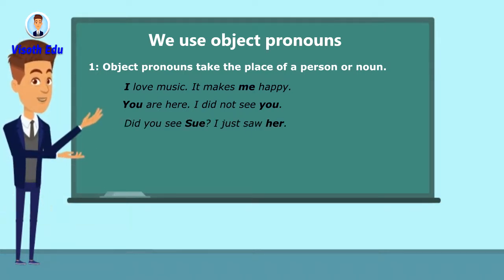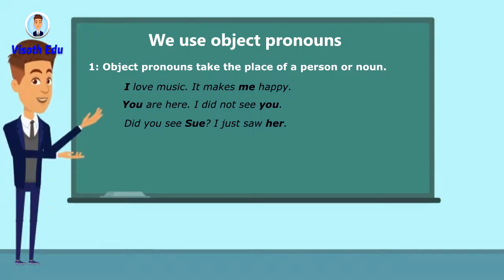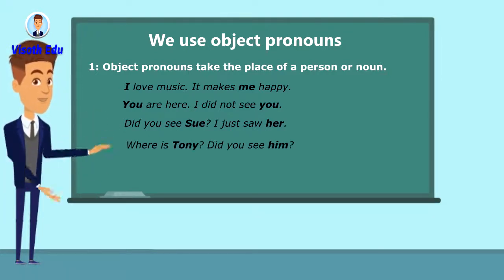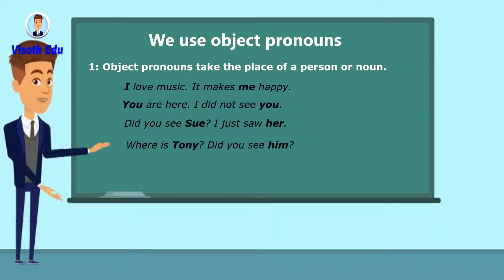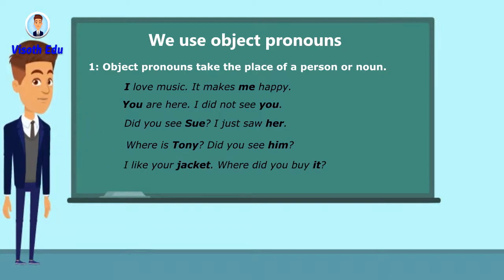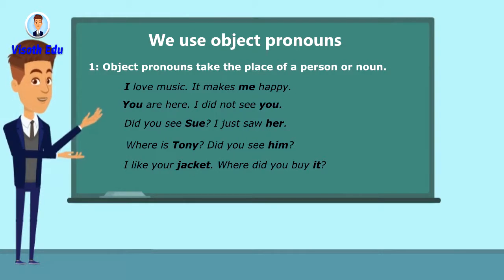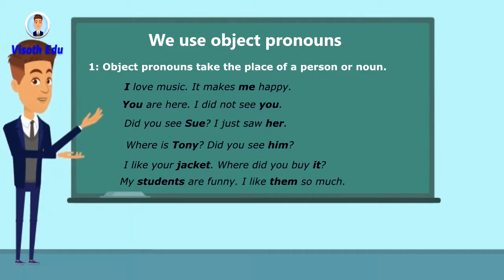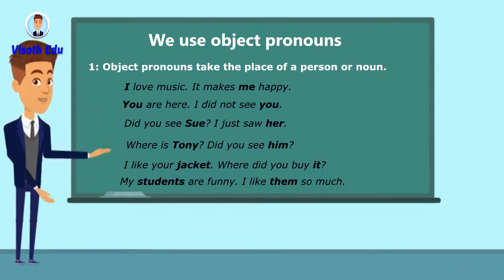'Did you see Sue? I just saw her.' 'Her' is the objective pronoun — it takes the place of the noun Sue. 'Where is Tony? Did you see him?' 'Him' is the objective pronoun — it takes the place of the noun Tony. 'I like your jacket, where did you buy it?' 'It' is the objective pronoun — it takes the place of the noun jacket.